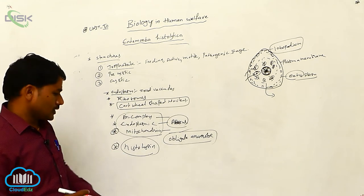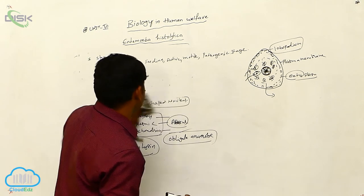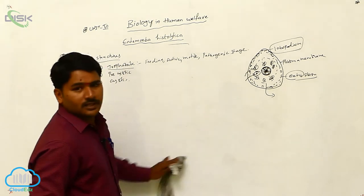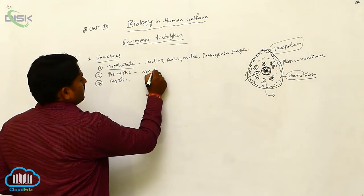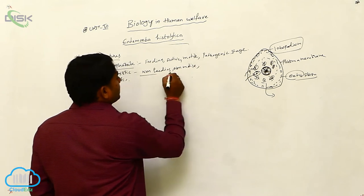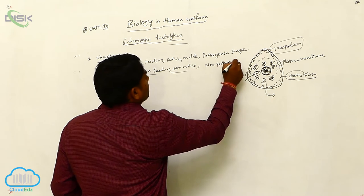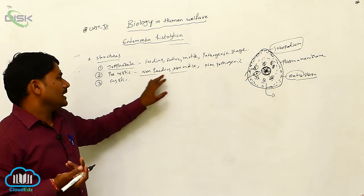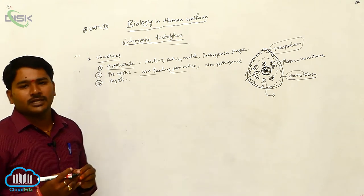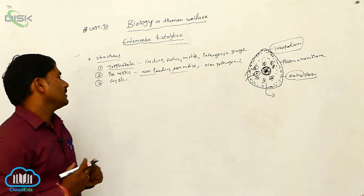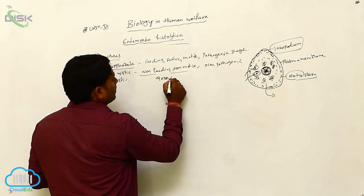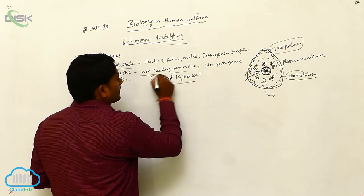Next is the precystic stage. It is non-feeding, non-motile, and non-pathogenic. It will not feed upon tissue and will not move anywhere because the lobopodium disappears after the trophozoite stage. It does not cause any disease or infection.